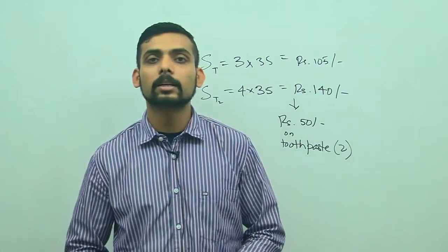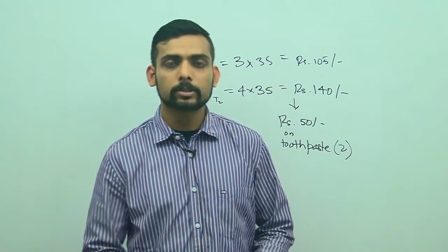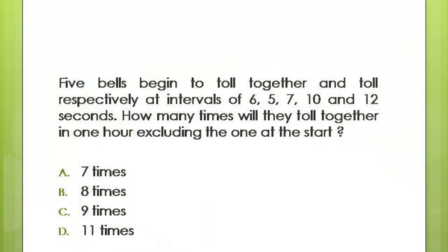And that is the correct answer. It is much easier evaluating it using options. So similarly, let's take a look at one last example. 5 bells begin to toll together and toll respectively at intervals of 6, 5, 7, 10 and 12 seconds. How many times will they toll together in 1 hour, excluding the one at the start?